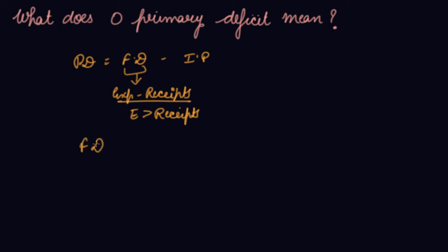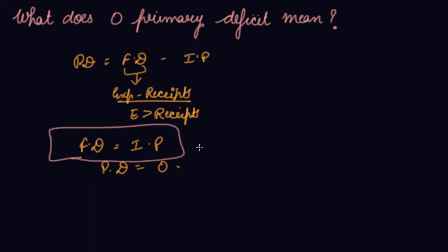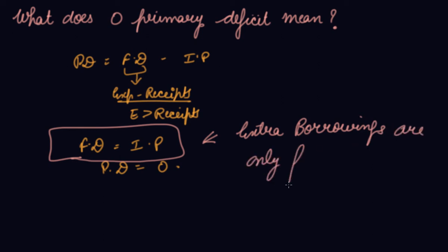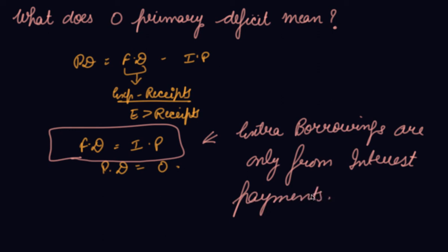If your fiscal deficit is equal to your interest payment, then only your primary deficit is equal to zero, which means the extra borrowings that the government takes are only for paying the interest, and all other expenditures are easily covered by the receipts. So the extra borrowings are only for interest payments; the rest of the expenditures are covered from the receipts itself. The government has an existing loan but is taking another loan just to meet the obligation of interest payment.